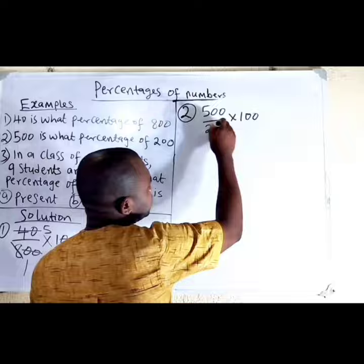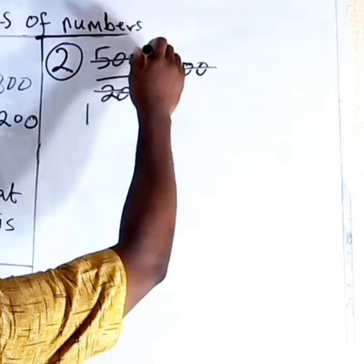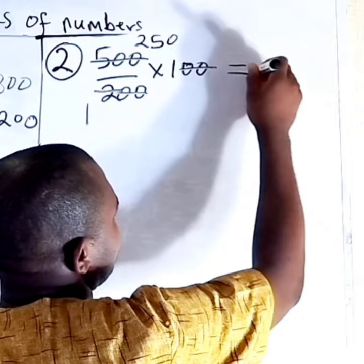These two zeros — we can cancel them. We divide the two zeros by themselves to get one, then divide 500 by 2. We have 250. So the answer will be 250%. That is to say, 500 is 250% of 200.